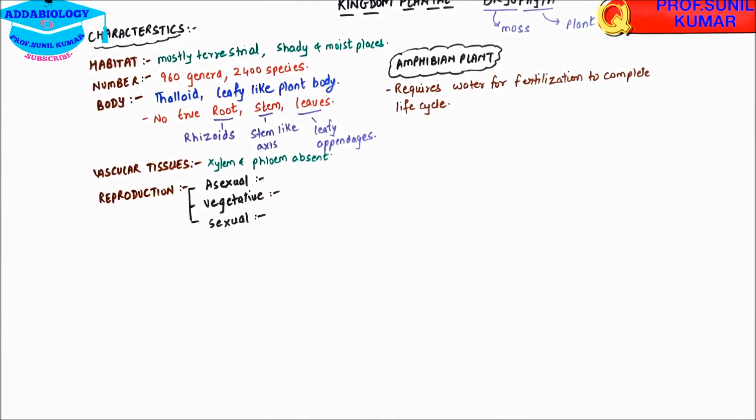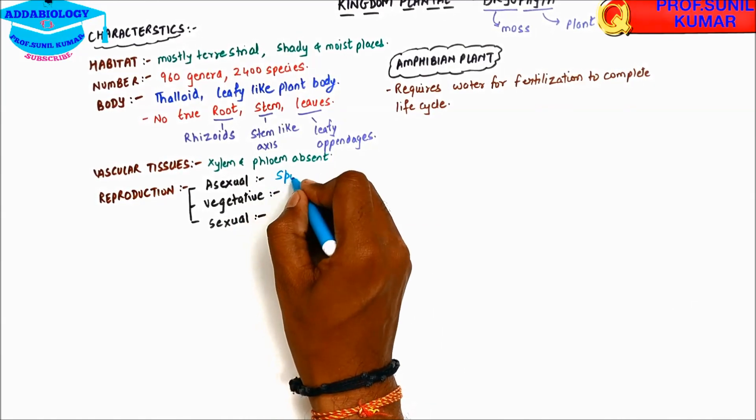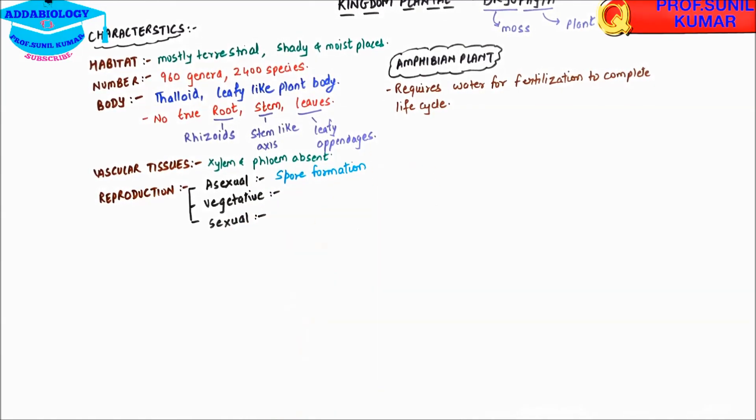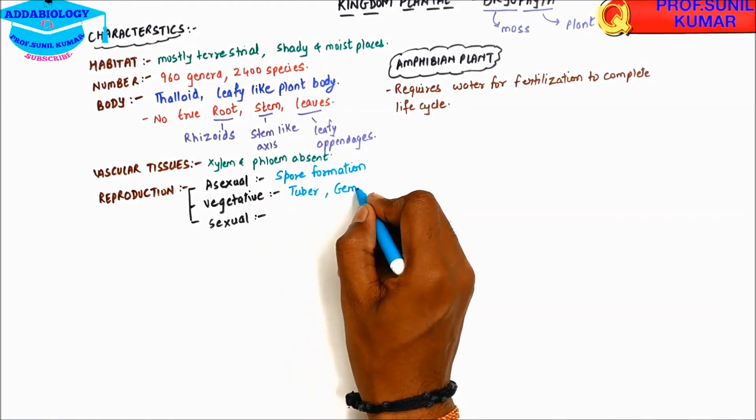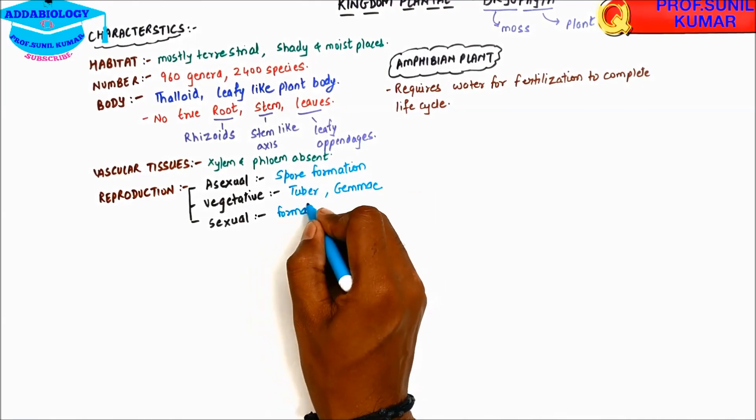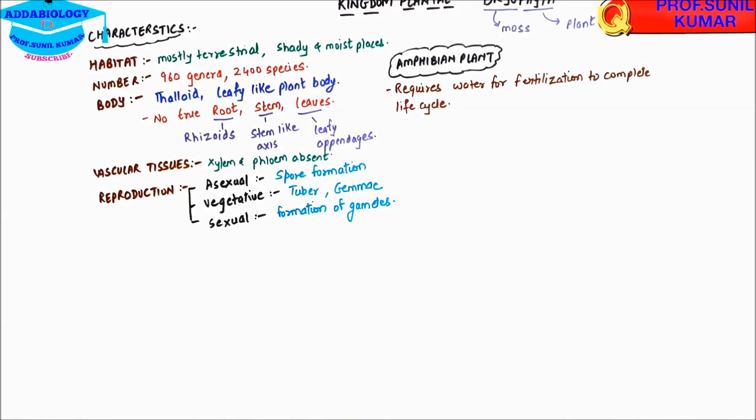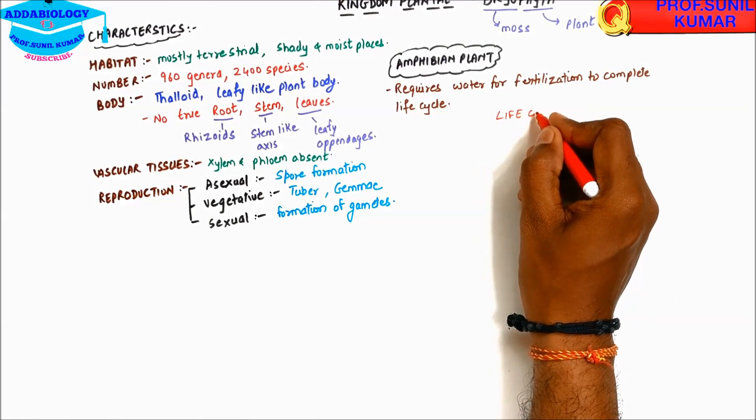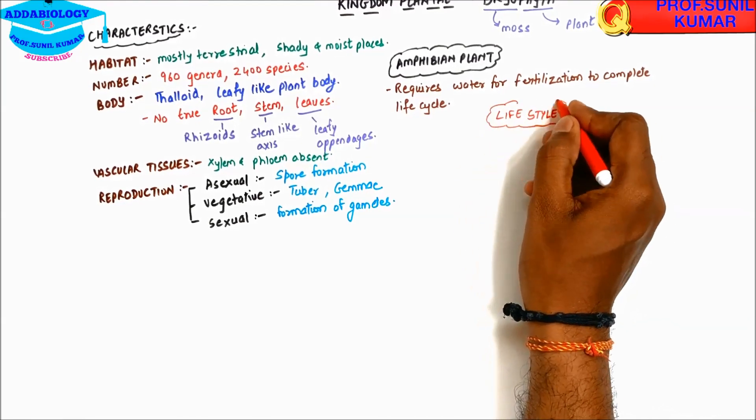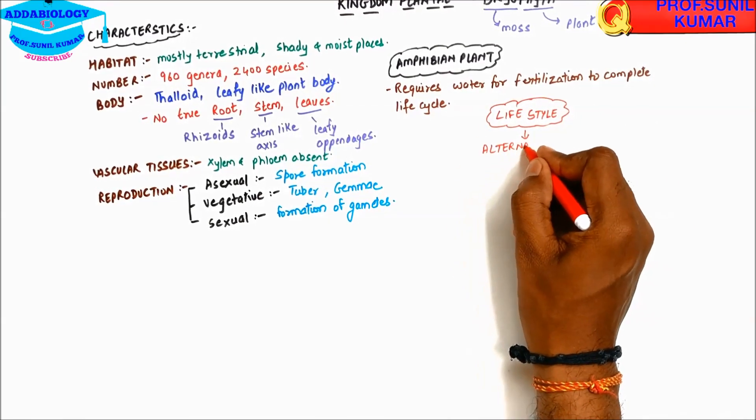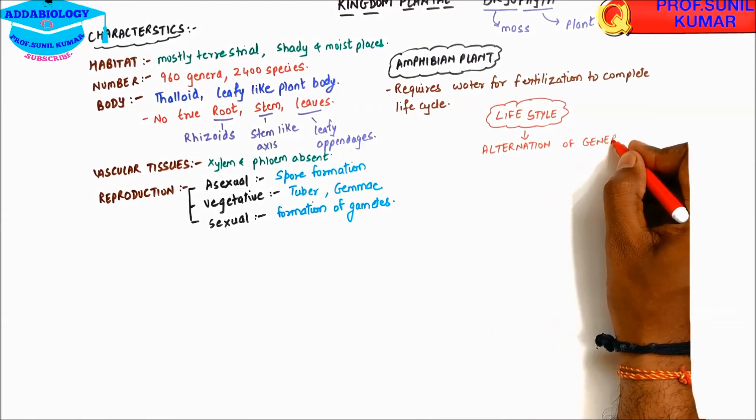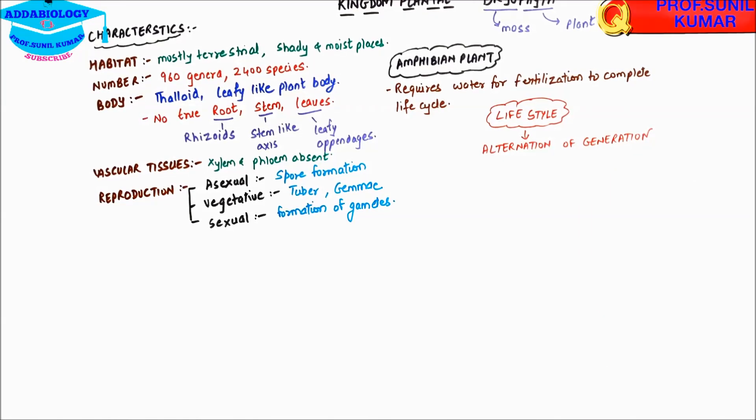When we talk about asexual reproduction, it is by spore formation. When we talk about life cycle or lifestyle of bryophyta, they show alternation of generation. They show heteromorphic alternation of generation.